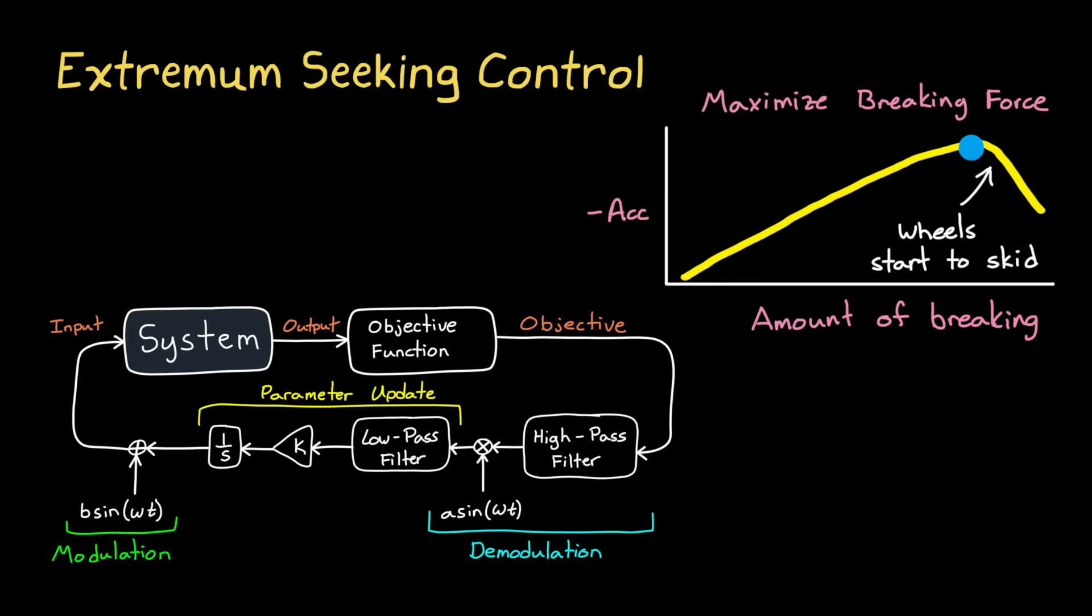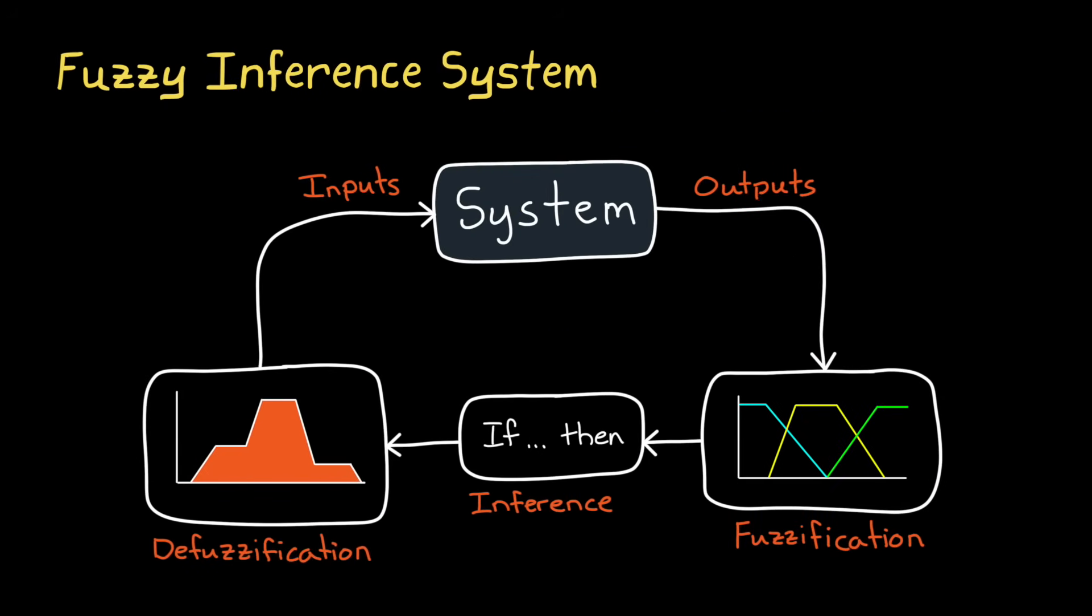It's kind of amazing how many wildly different methods there are in data-driven control. And to give you an example of one that isn't like any that we've talked about so far, let's look at fuzzy inference systems. These are a form of rule-based control that use fuzzy logic to model systems and make decisions based on imprecise or uncertain input data.